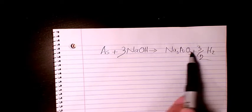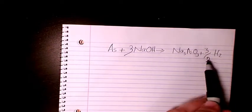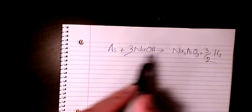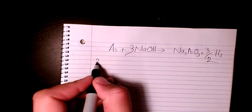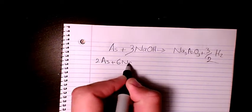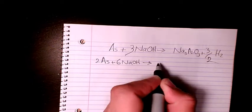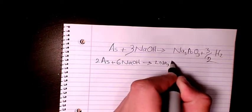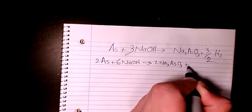oxygen? Oxygen: three and three is balanced. So in order to get rid of this denominator, we need to multiply everything by two. So it's gonna be two As plus six NaOH, it gives us two Na3AsO3 plus three